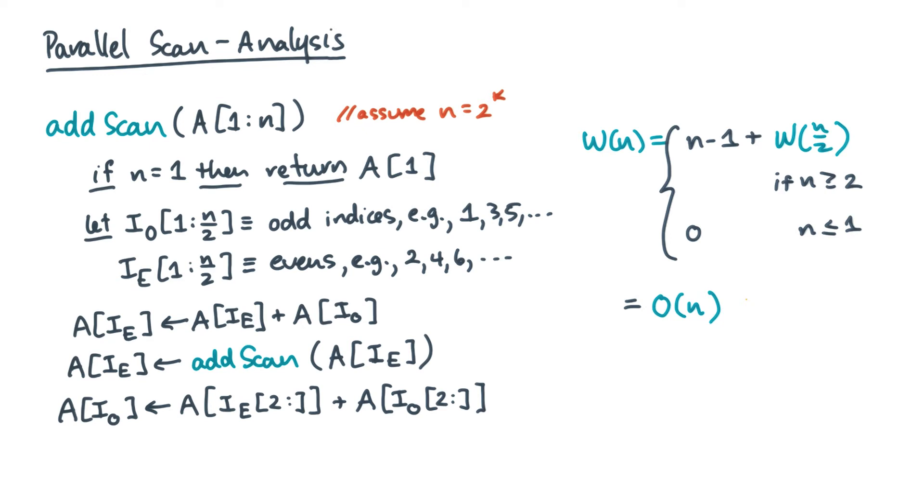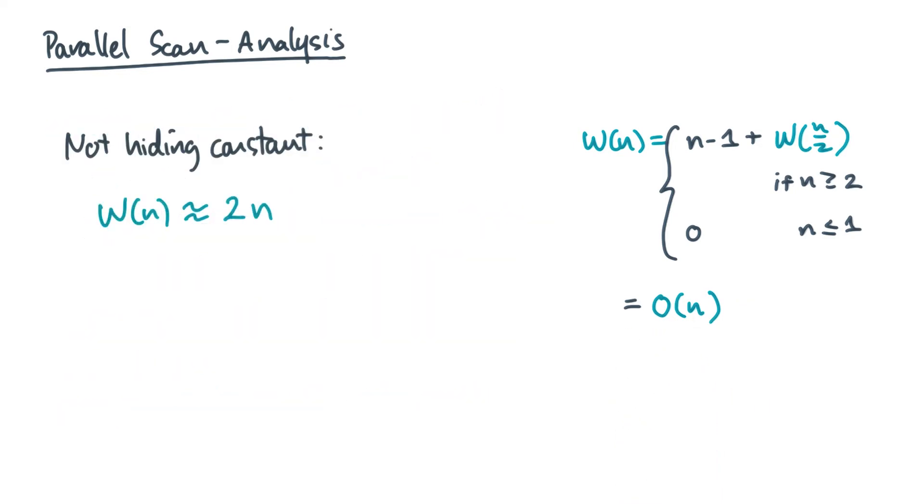Before moving on to the span, let me make a quick remark. I hid a constant in here. What's the constant? As it happens, the constant is about 2. Now that 2 is counting only addition operations.